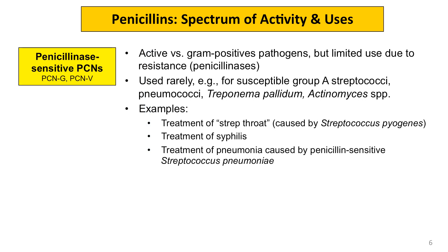Let's start with the narrow-spectrum penicillinase-sensitive penicillins. These are active against gram-positive pathogens, but their use is limited due to resistance, namely the production of penicillinases. They are used rarely in clinical practice — for example, for susceptible group A streptococci or Streptococcus pyogenes, for some Streptococcus pneumoniae isolates, Treponema pallidum, and Actinomyces species. Examples include treatment of strep throat, syphilis, and pneumonia caused by penicillin-sensitive Streptococcus pneumoniae.